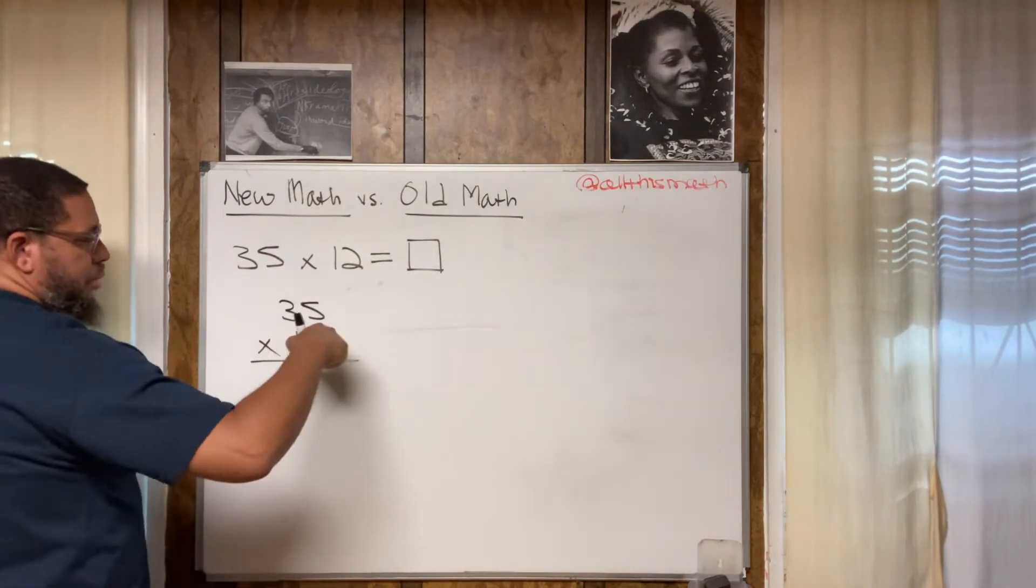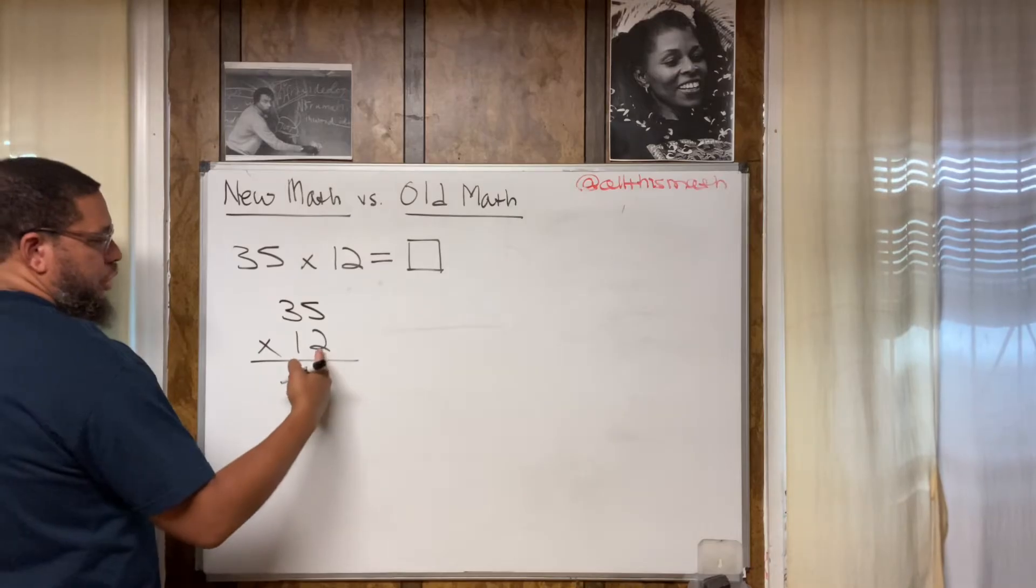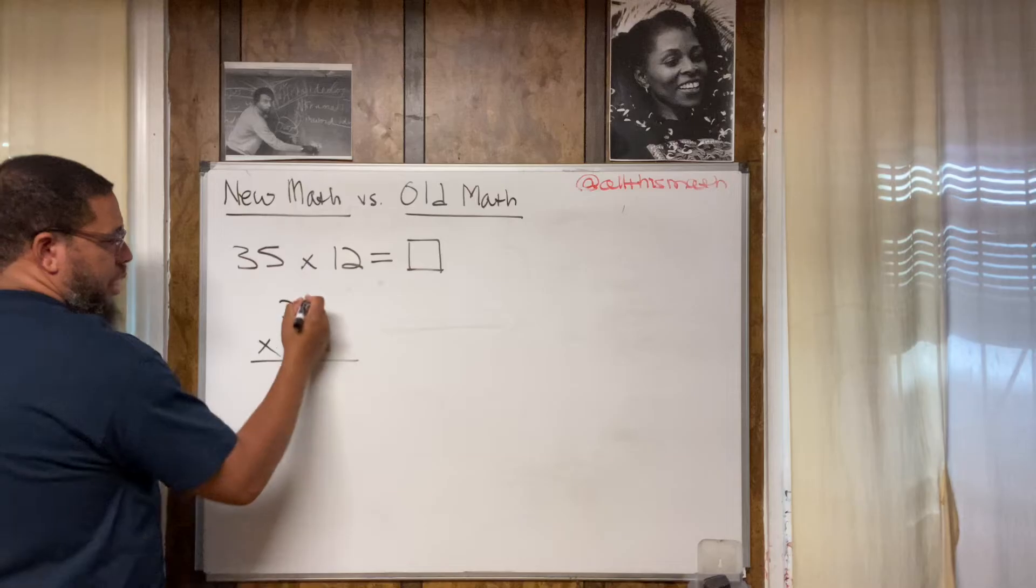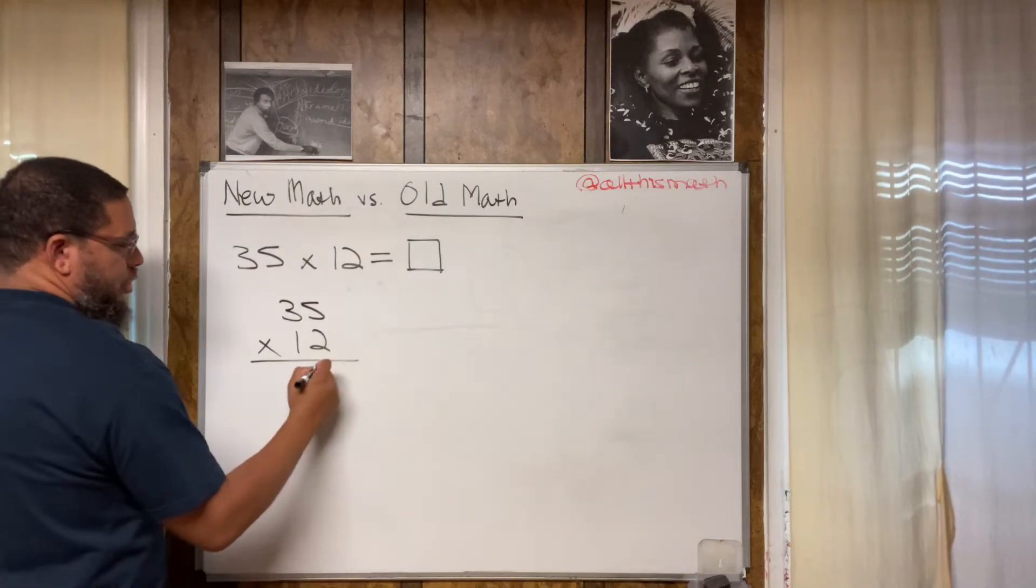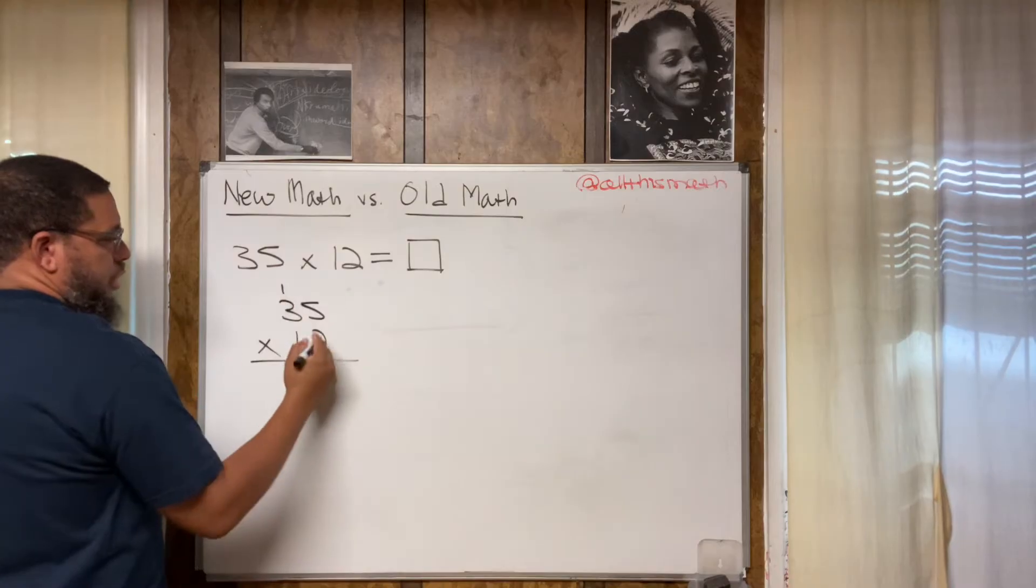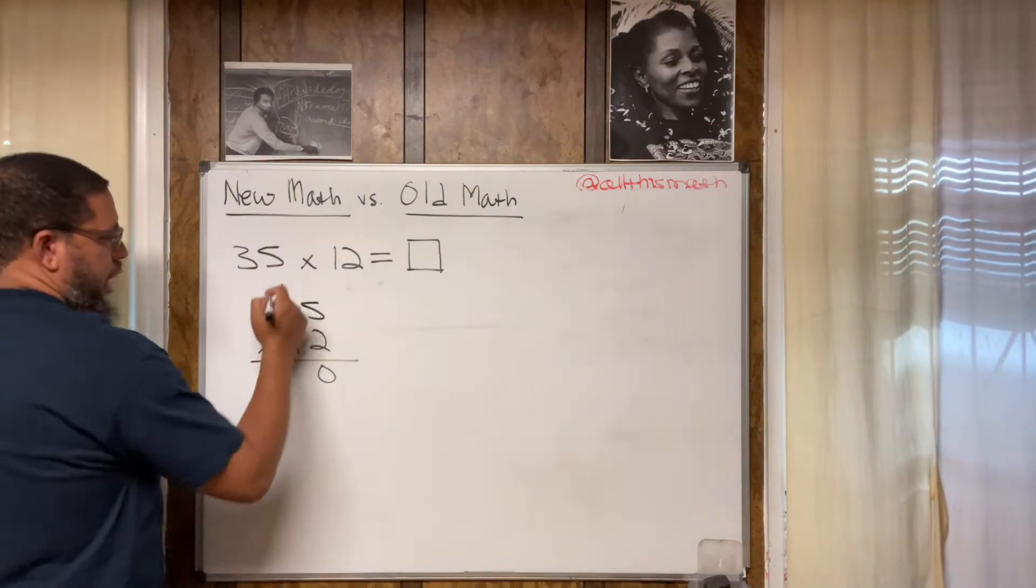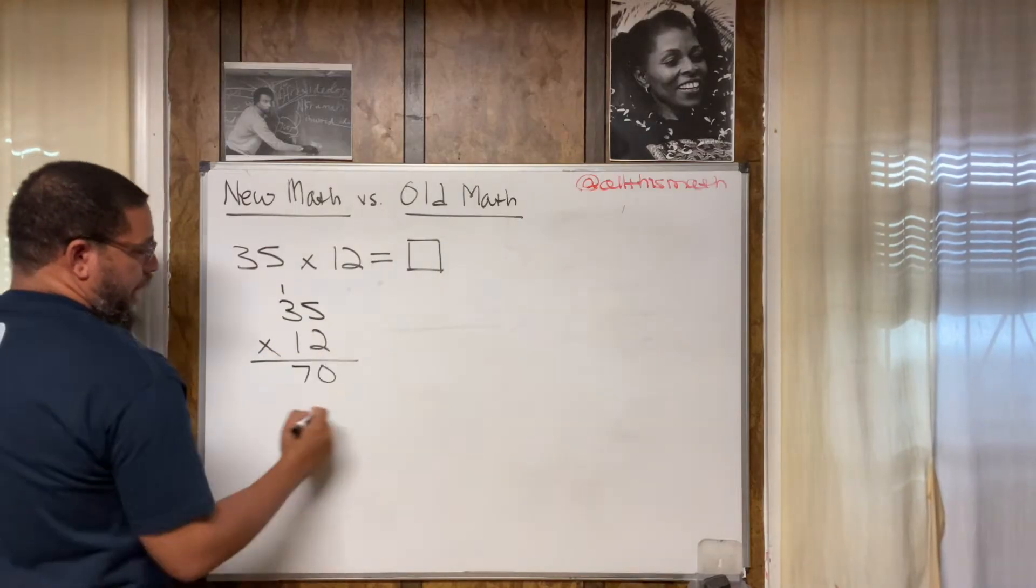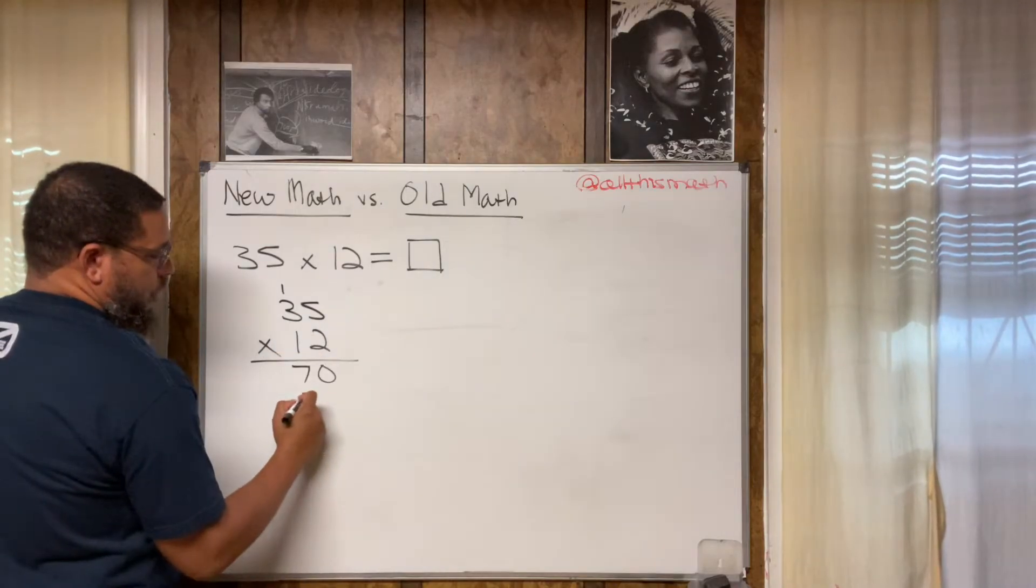You start at the bottom number, the digit to the far right in the ones place. You do two times everything up here and then you do one times everything up here. So two times five is going to be 10. So I write the zero from the ones place and I carry a one to the next column over. Then I do two times three, which is six, and then I add the one, which is going to be seven. And then I go to the one. I do one times five, but I indent one space.